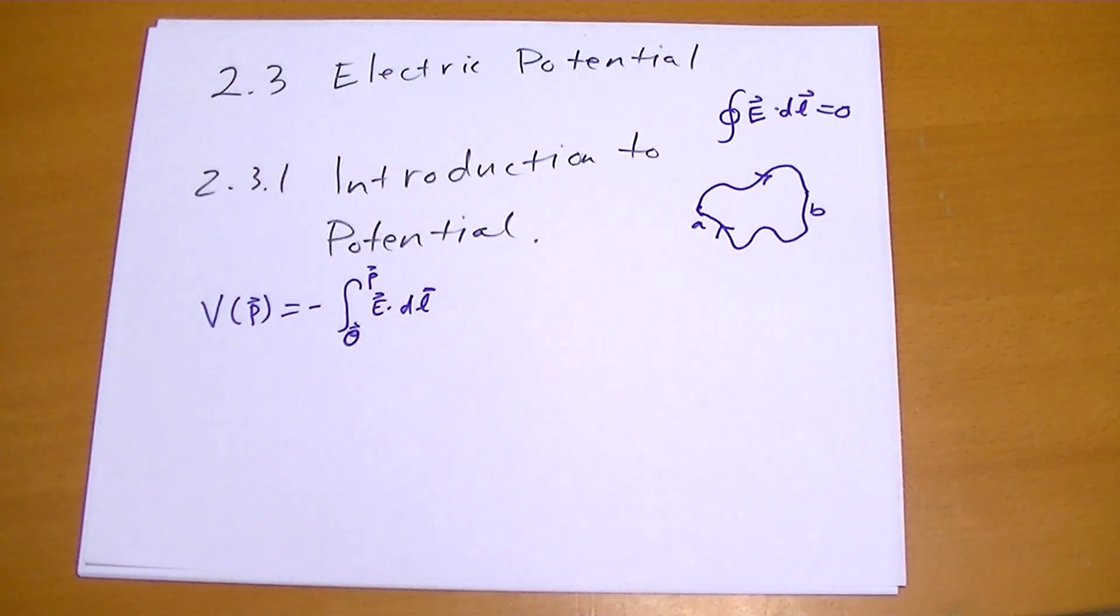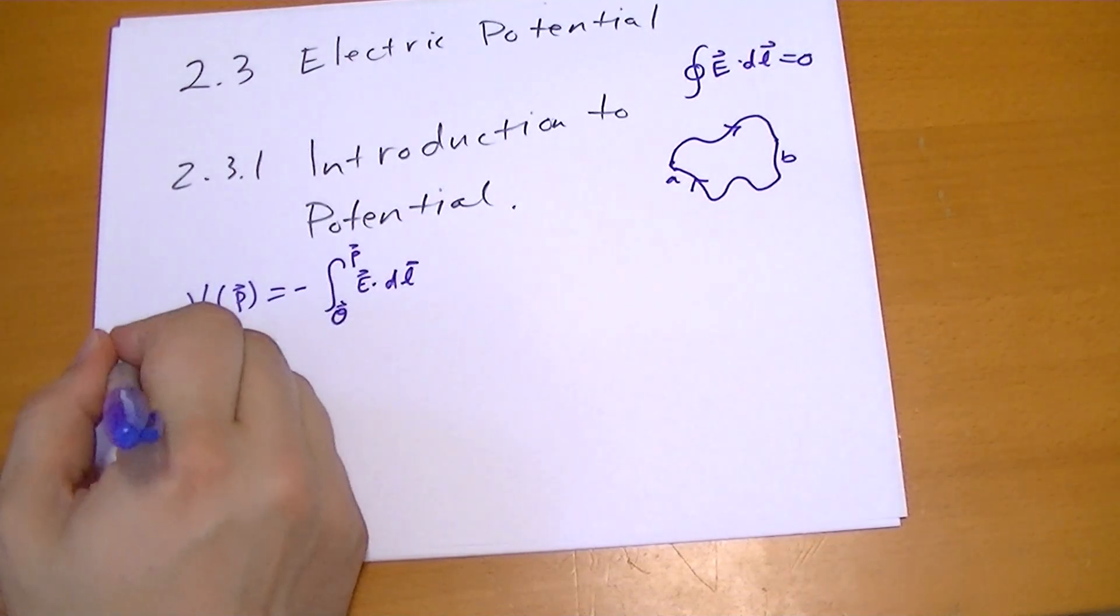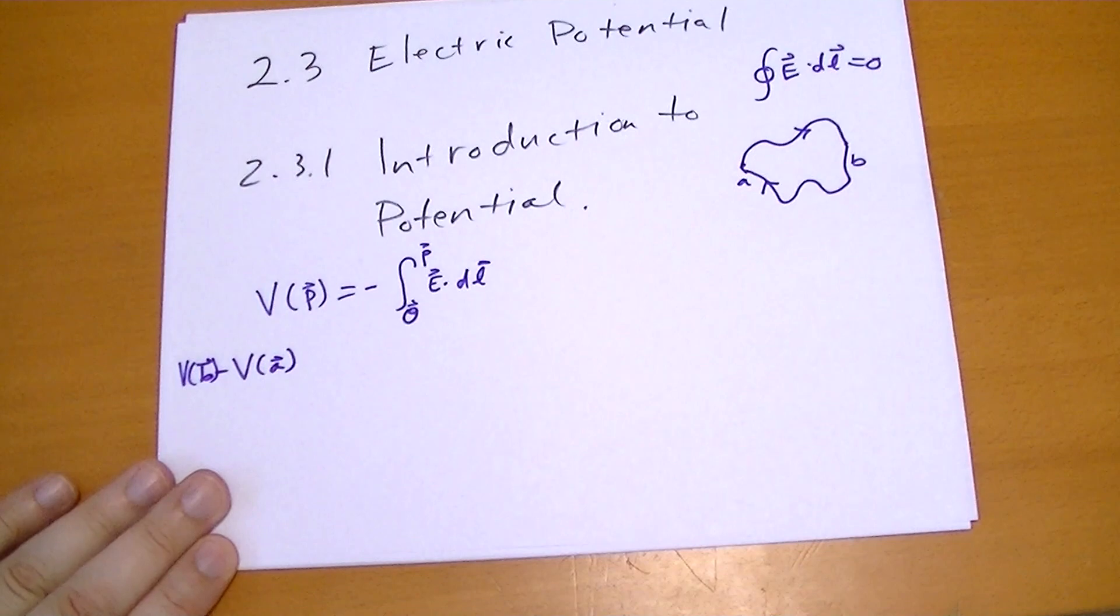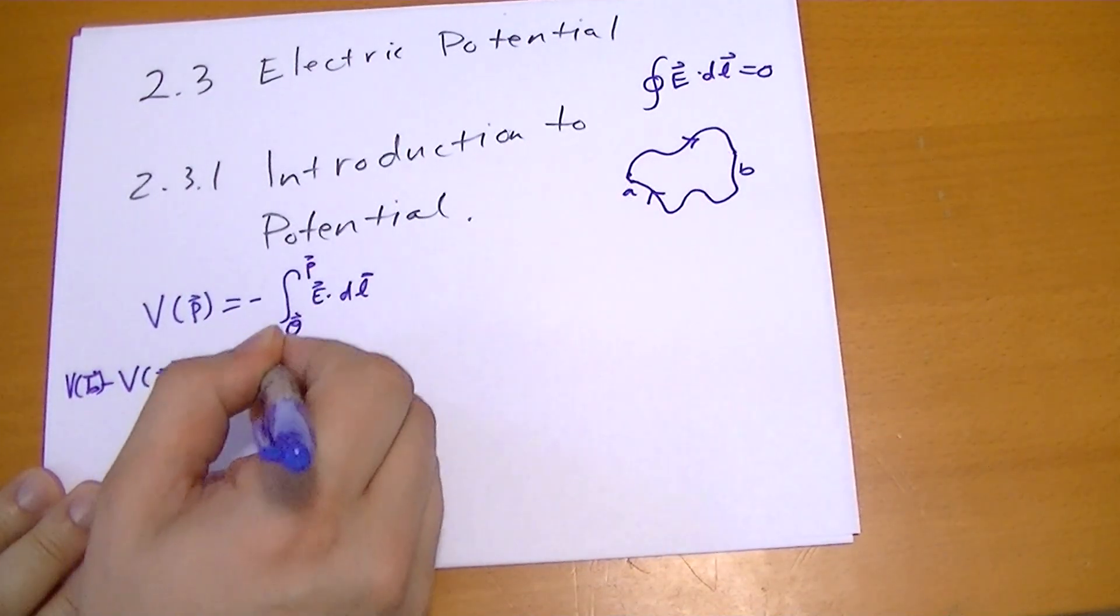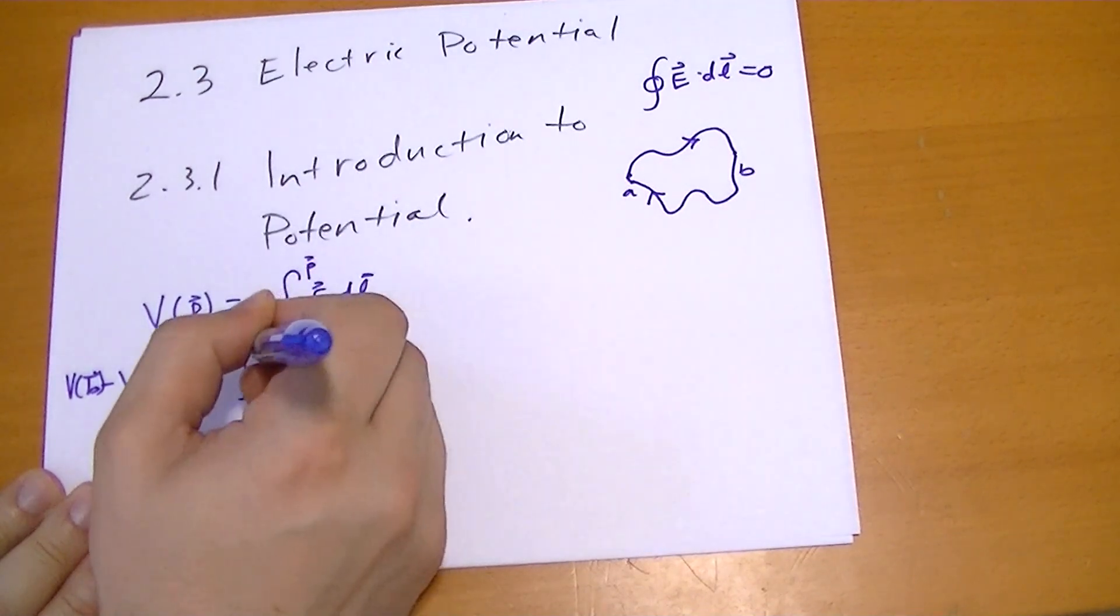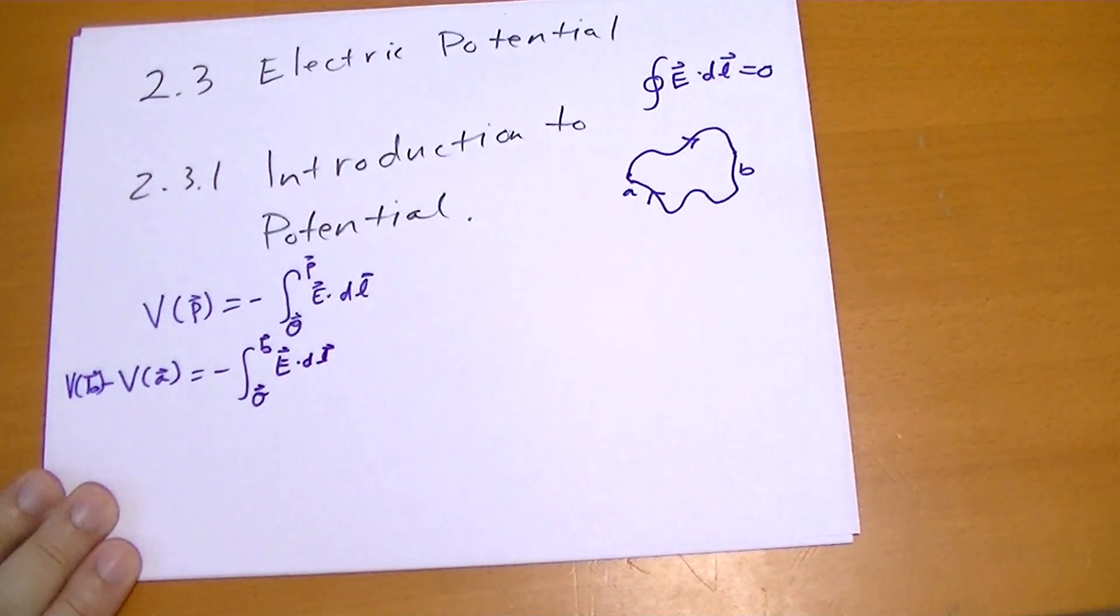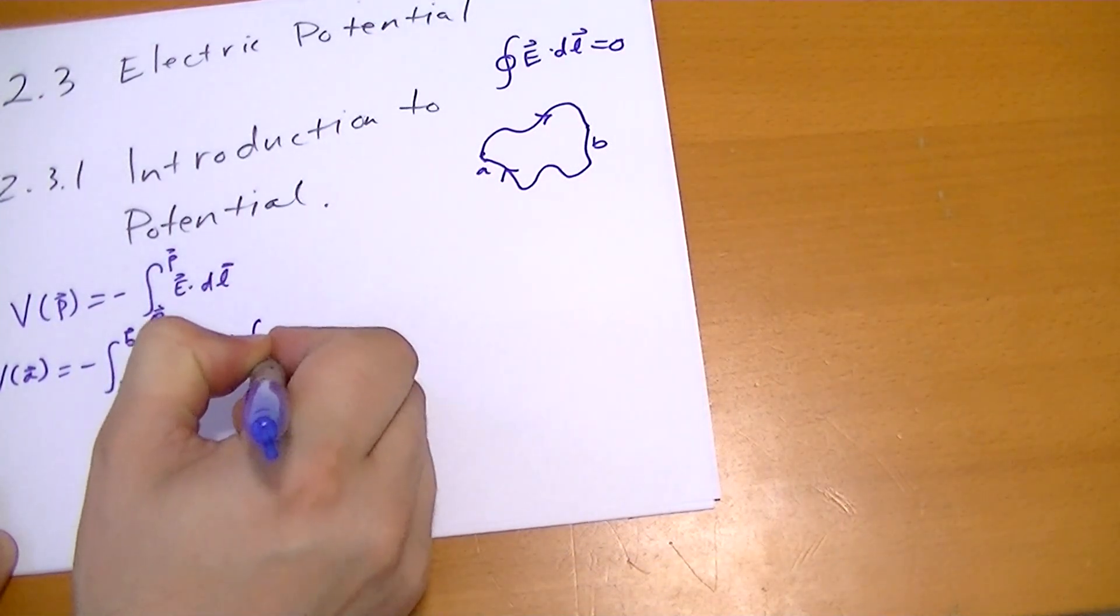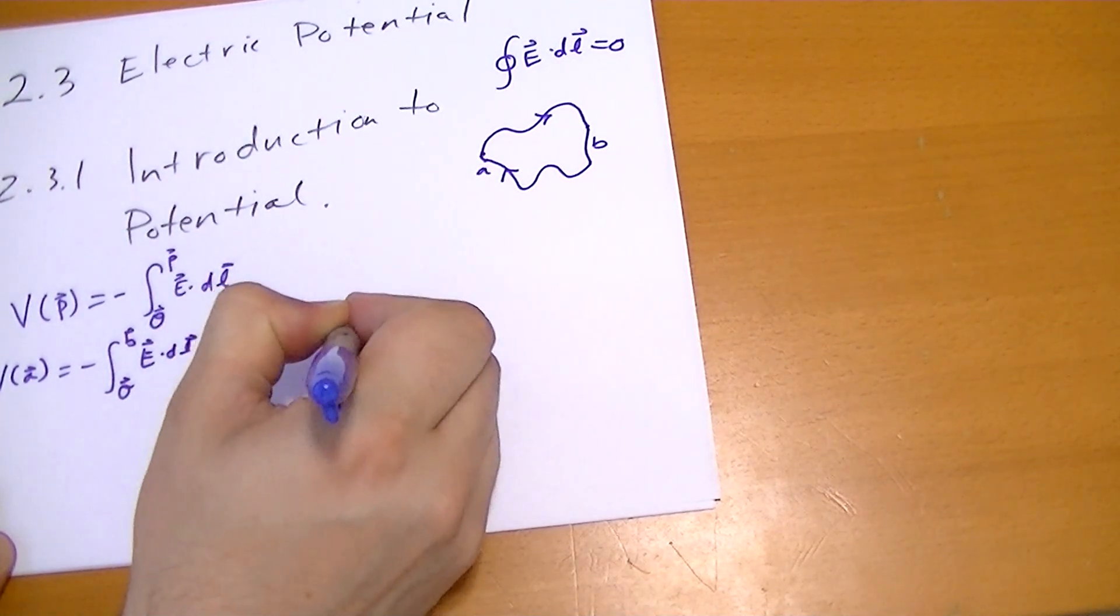So let's take the electric potential between two points. Let's say we have V(B⃗) - V(A⃗). And of course, V(B⃗) is just equal to minus the integral from this curly O vector to B⃗ of E⃗·dL. And we're subtracting a negative, so we have plus the integral from curly O⃗ to A⃗ of E⃗·dL.